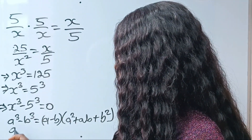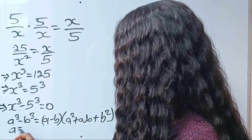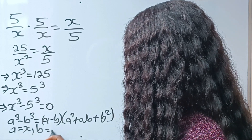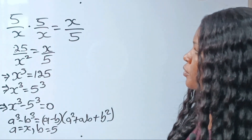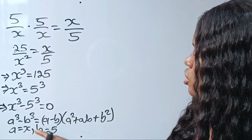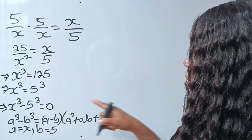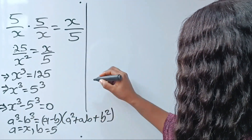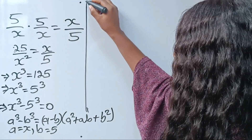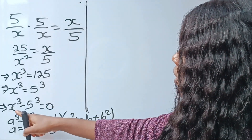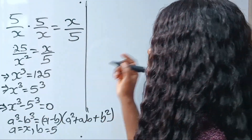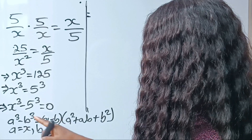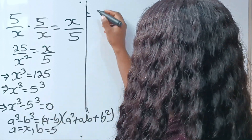Now in this case, our a is equal to x while our b is equal to 5. So we are going to substitute these values into this identity and rewrite it in that form. We have a minus b, that is x minus 5.